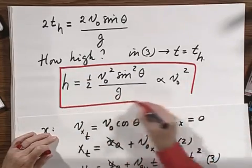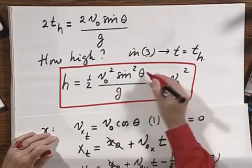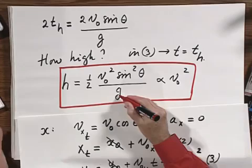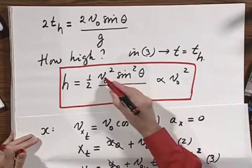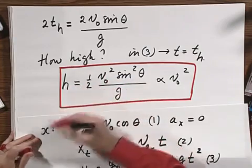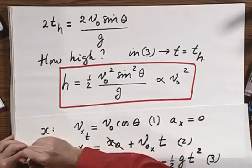And so you see here that when you double v zero, all things being equal, and g on the moon is the same all the time, so you don't have to worry about g. Notice that when you double v zero, that it goes four times higher.